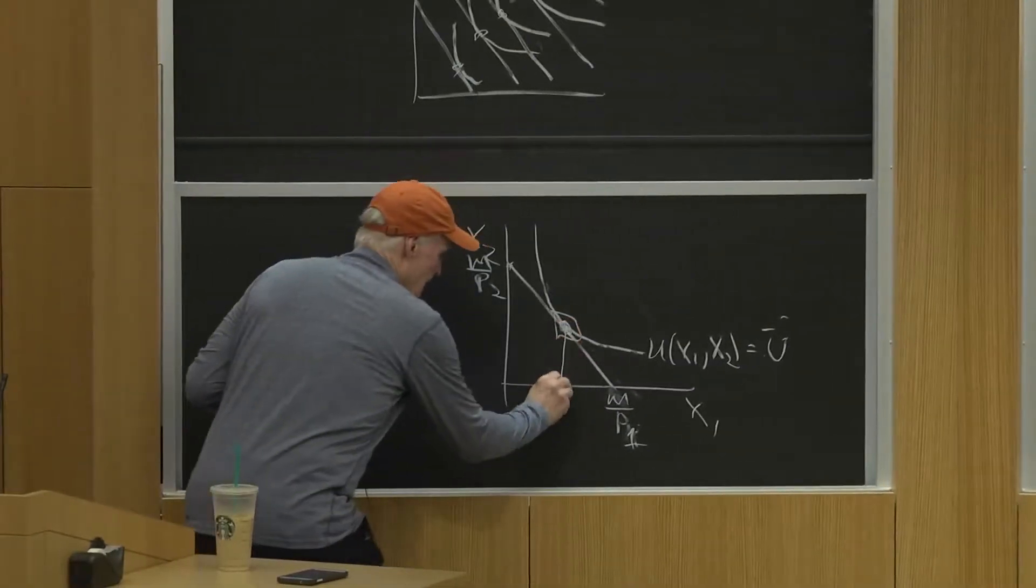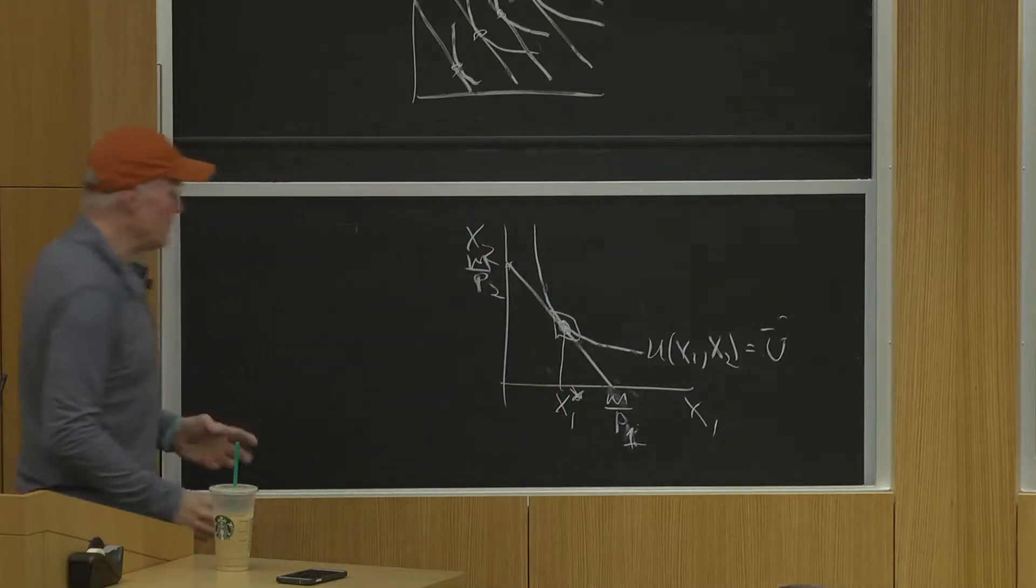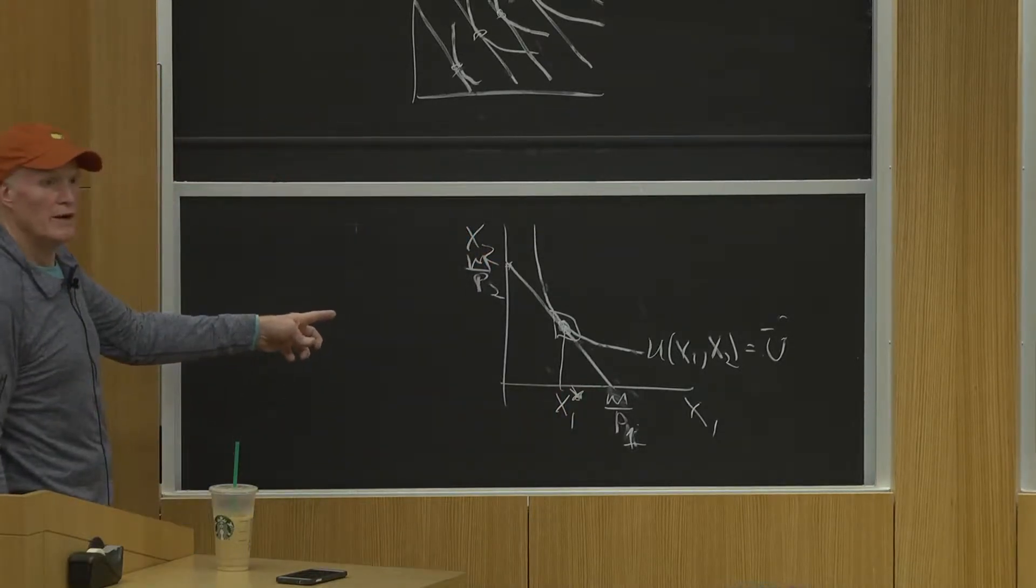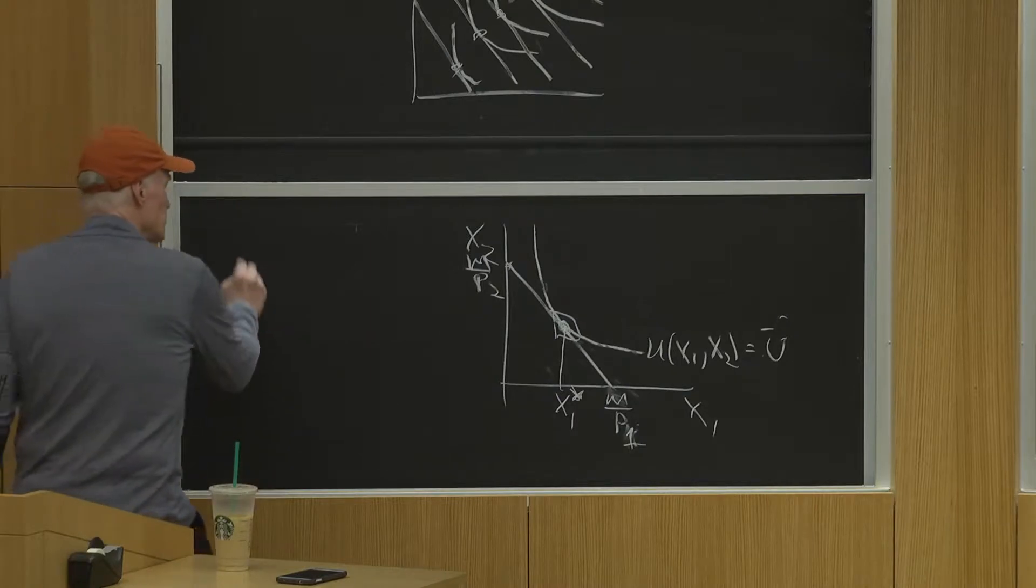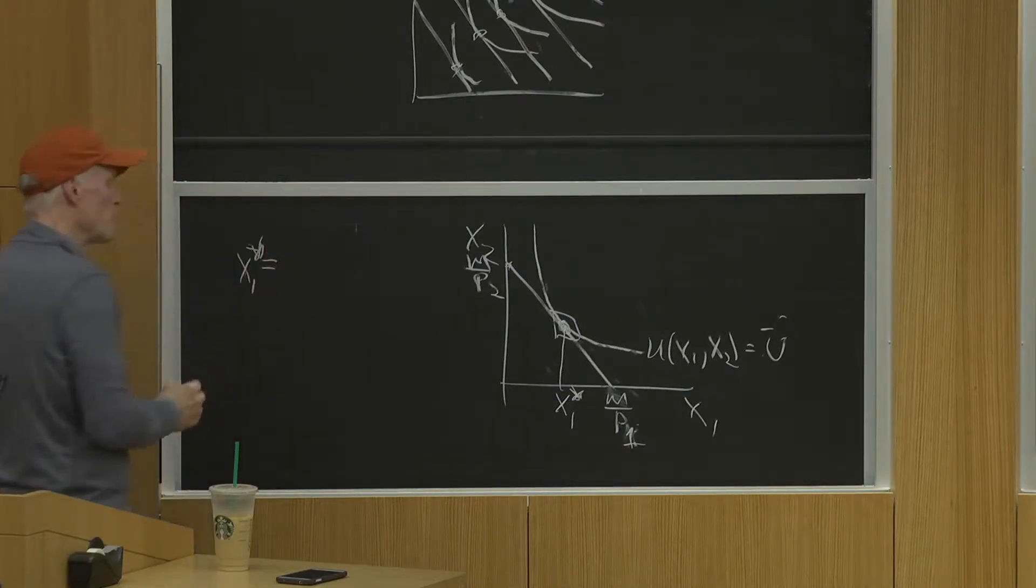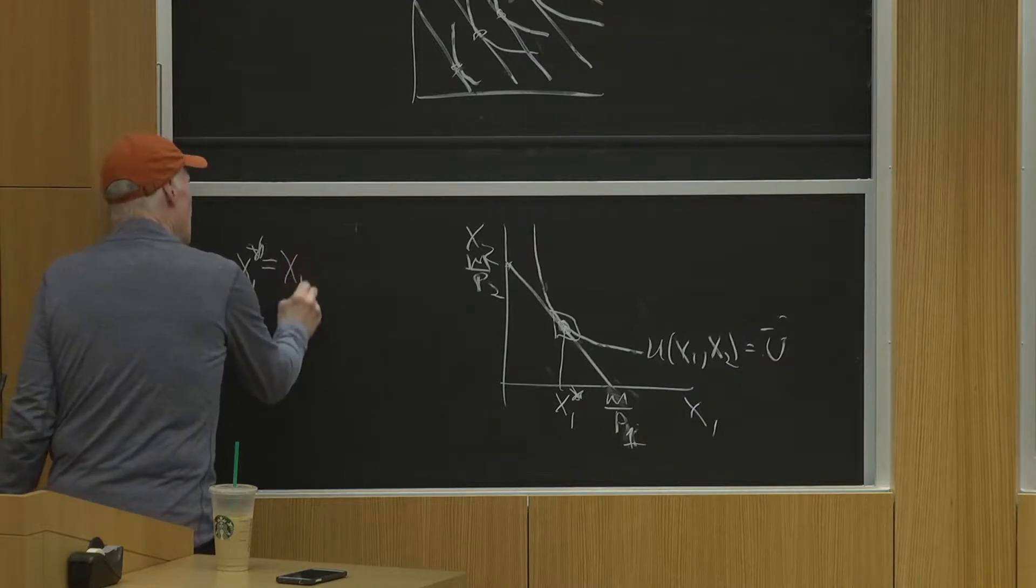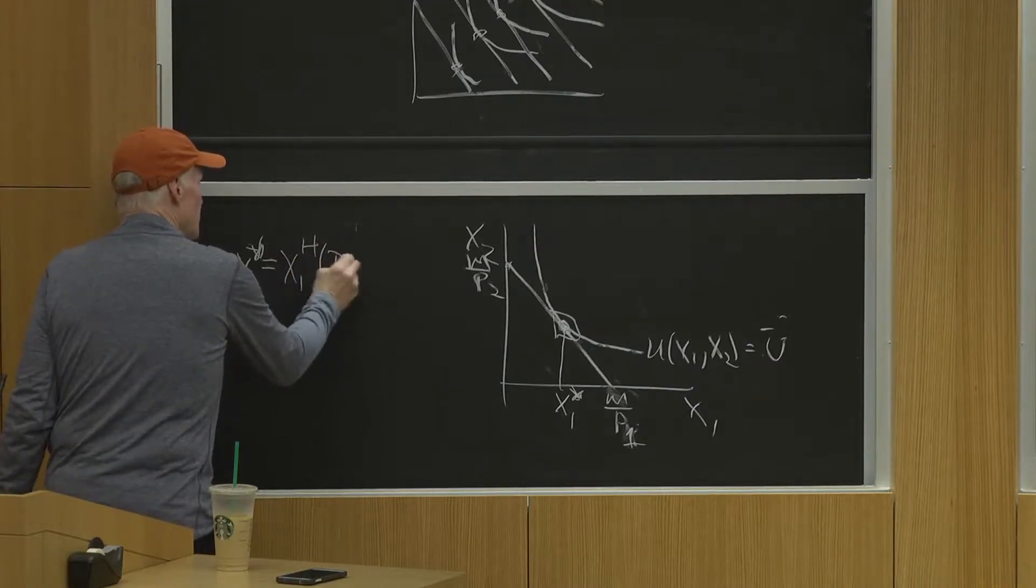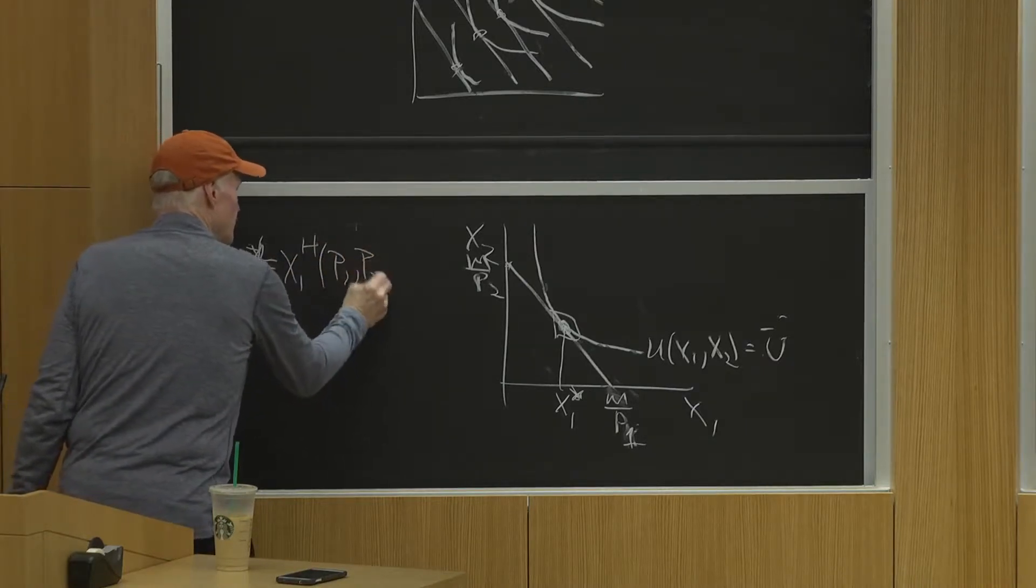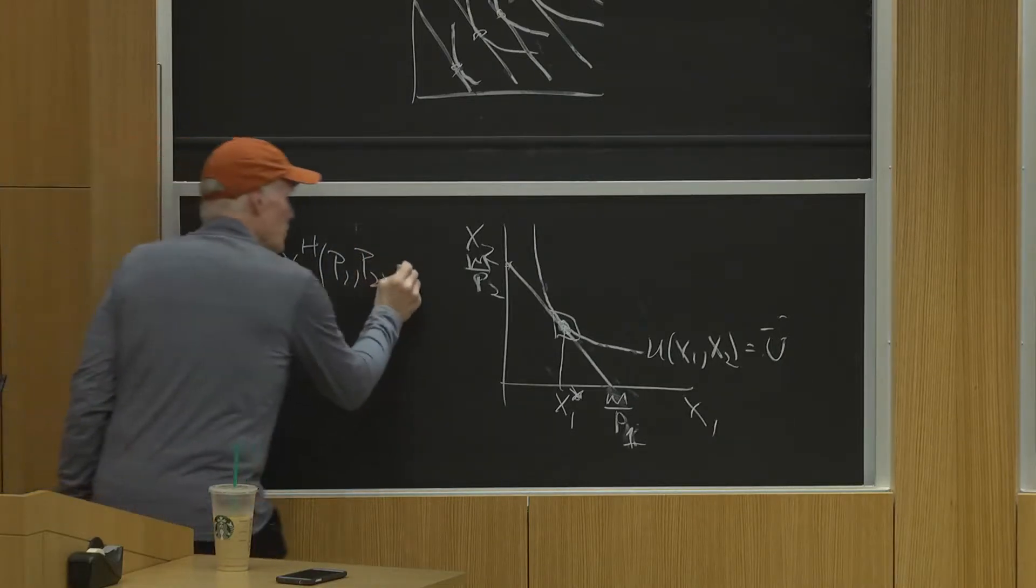So go back to this point. This quantity here, x1 star, that's the equilibrium choice of good one. x1 star would be equal to what? How could you describe it in terms of the Hicksian system? It would be x1h of P1, P2, and u bar.